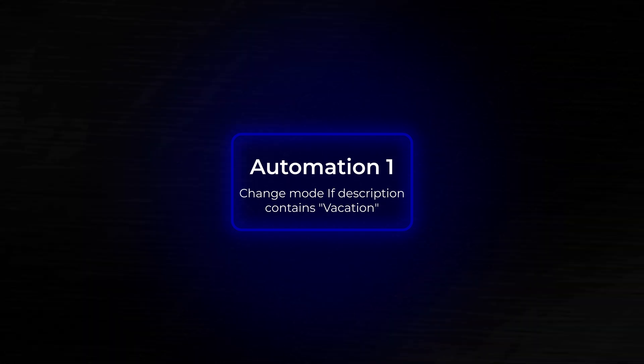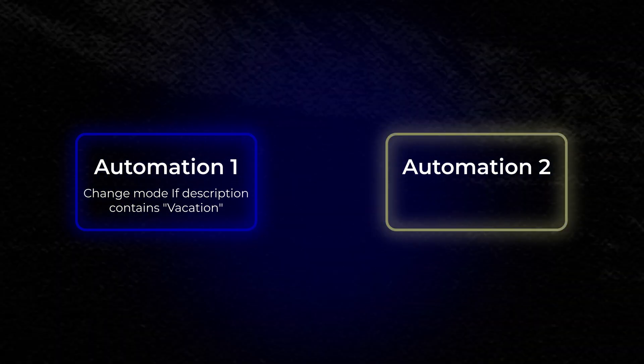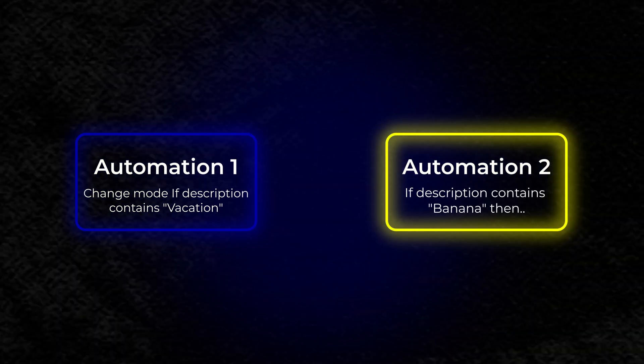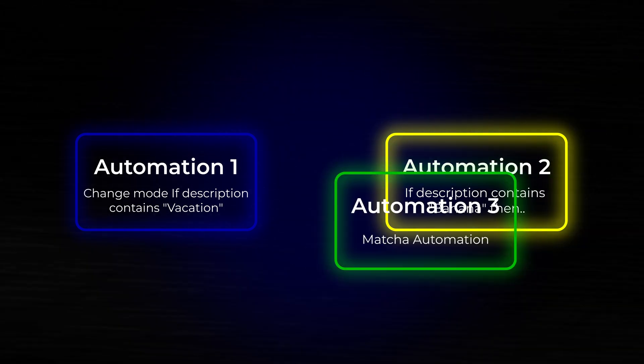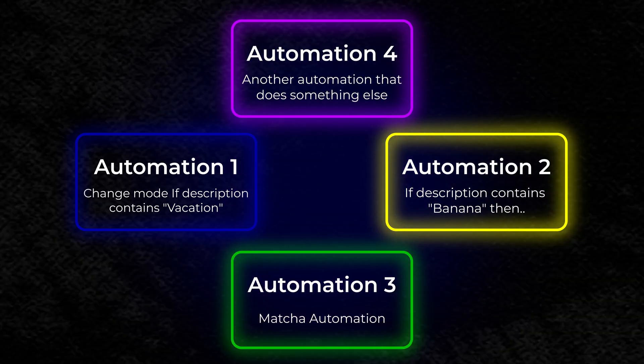If you want to create a different automation using a word, let's say banana, you would then need to create a second automation, and so on. So for each new thing, you would need a new automation. Some of you Home Assistant pros are probably thinking: all I need is one automation — I'll add multiple triggers and use condition statements to match the actions that I want.